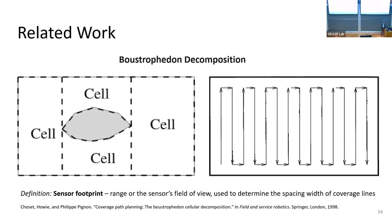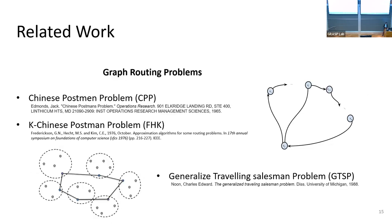The boustrophedon classical approach splits the environment into cells that do not contain any obstacles, and complete coverage of each region is achieved by applying boustrophedon or lawnmower motion within these regions — that's the boustrophedon cell decomposition (BCD). For graph routing, the Chinese Postman Problem is the path planning problem on graphs requiring finding the optimal shortest path that visits every single edge of the graph, compared to the Traveling Salesman Problem which requires visiting every vertex.